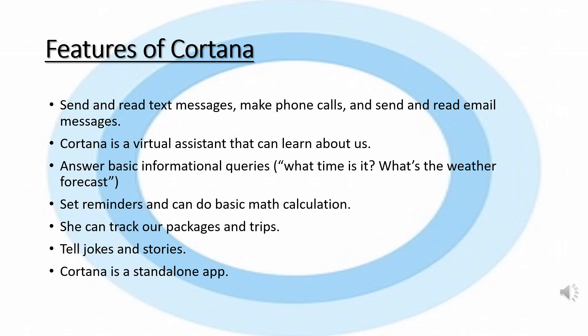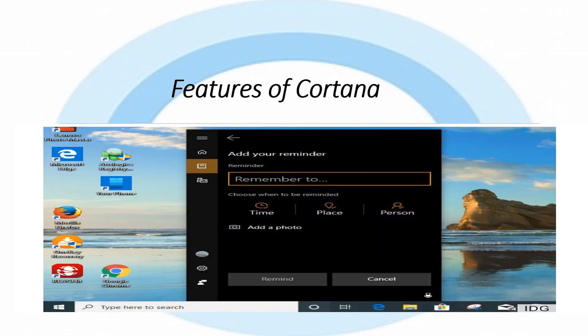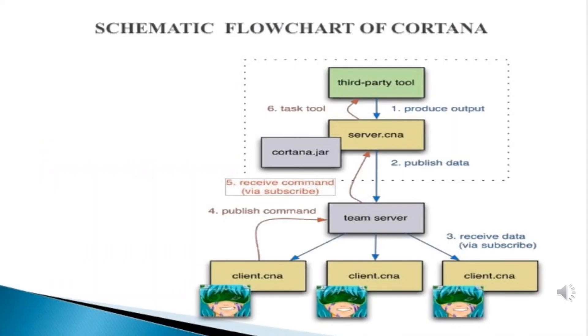Features of Cortana: Cortana can make phone calls and send and read email messages. It is a virtual assistant that can learn about our daily life activities. It can also answer basic information queries like 'What time is it?' or 'What's the weather forecast?', set reminders, and do basic math calculations. All in one, Cortana is a standalone app.